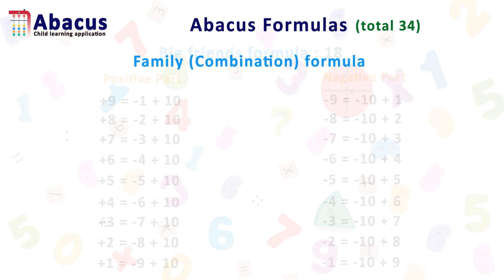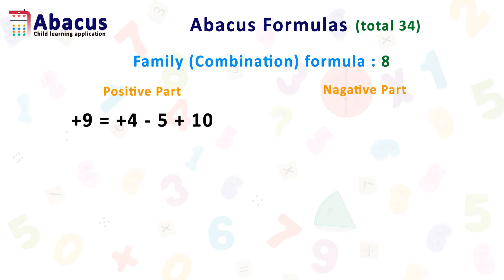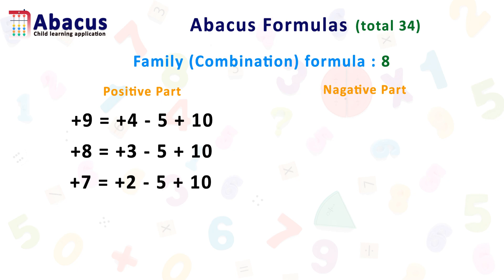The next formulas are family formulas, or we can also call them combination formulas. There are 8 family formulas in abacus. The positive part of family formulas are: plus 9 equals plus 4 minus 5 plus 10; plus 8 equals plus 3 minus 5 plus 10; plus 7 equals plus 2 minus 5 plus 10; plus 6 equals plus 1 minus 5 plus 10.